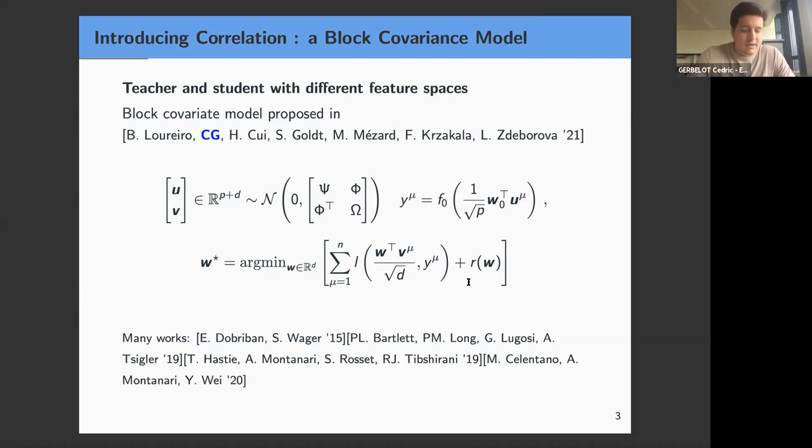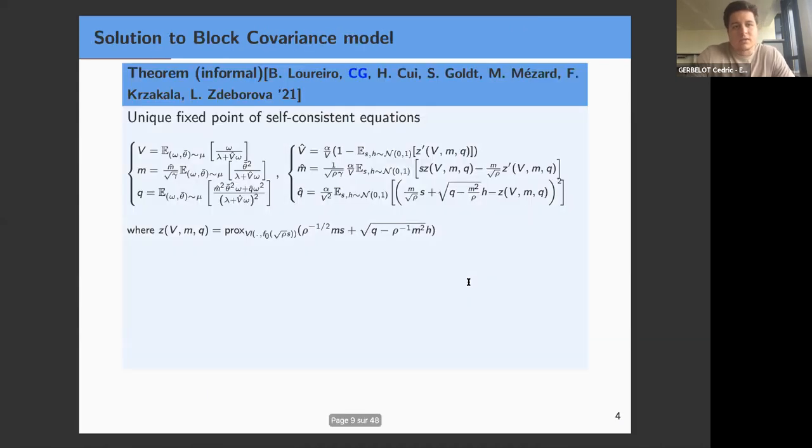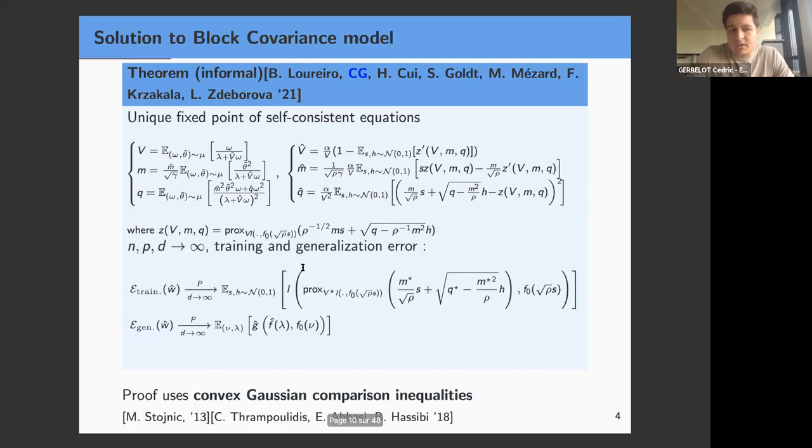Let's jump directly to the solution. It's not very nice but I want to show what it looks like. The theorem that we have is if you consider the unique fixed point to this set of self-consistent equations you can exactly characterize the training and generalization error as the dimensions of the problem go to infinity. There are closed form formulas for these quantities and the proof uses convex Gaussian comparison inequalities. These inequalities are a family of proofs which are quite popular at the moment for this type of problem and that work very well. They were introduced by Mihail Ostojnik in 2013 and popularized in other works later on.